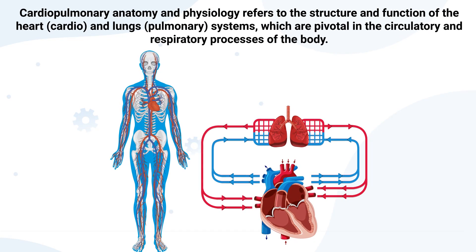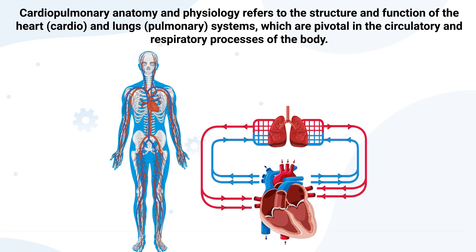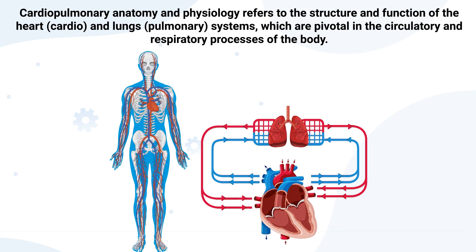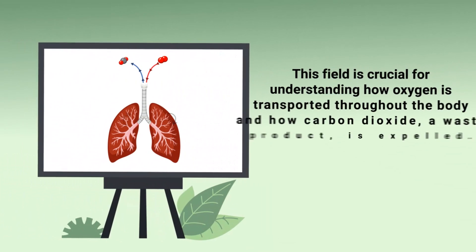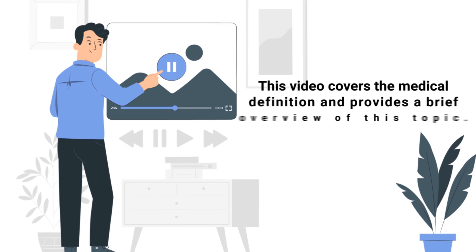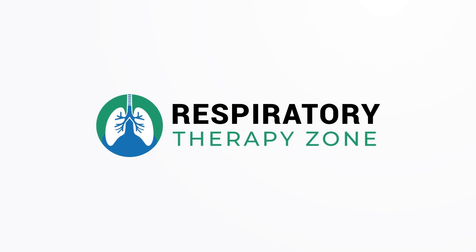Cardiopulmonary anatomy and physiology refers to the structure and function of the heart and lungs, which are pivotal in the circulatory and respiratory processes of the body. This field is crucial for understanding how oxygen is transported throughout the body and how carbon dioxide, a waste product, is expelled. This video covers the medical definition and provides a brief overview of this topic. So, if you're ready, let's get into it.